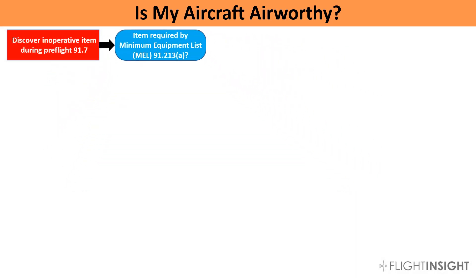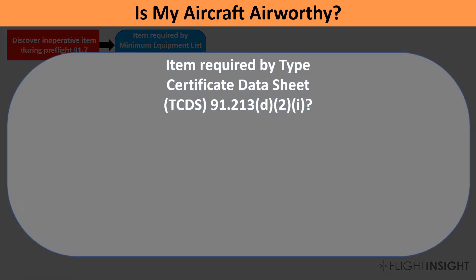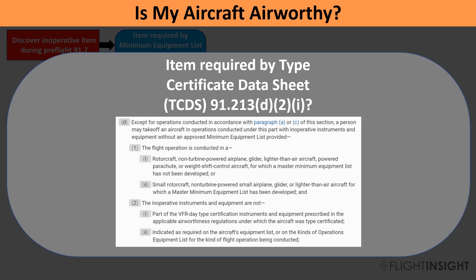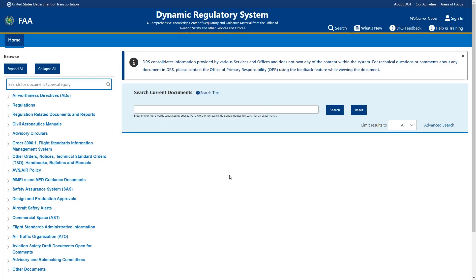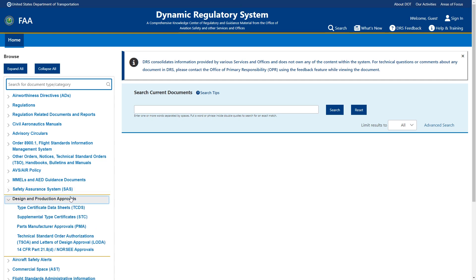Having gone through the MEL and determined the inoperative item isn't required, we go on to our next question: is the item required by something called the type certificate data sheet, or TCDS? This references 91.213 D2i. Remember, we said we'd be referencing paragraph D — so here it is. We can take an aircraft up without an MEL as long as we're flying one of the category or class aircraft listed, for example a non-turbine powered airplane, and the inoperative equipment is not part of the type certification requirements. All aircraft have type certificates from the FAA, and we can look up the specifics on their website, this time finding TCDS.